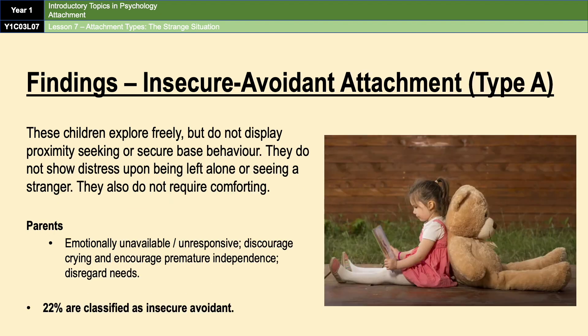The second most common attachment type was insecure avoidant, with around 22% of babies classified as this. These children explore freely but do not display proximity or secure base behavior. They don't show distress upon being left alone or seeing a stranger, and they don't require comfort upon reunion. They're trying to show a degree of independence because parents have encouraged that through being emotionally unavailable or unresponsive. Just because they're not showing distress doesn't mean they're not experiencing it — they're trying to handle it independently.